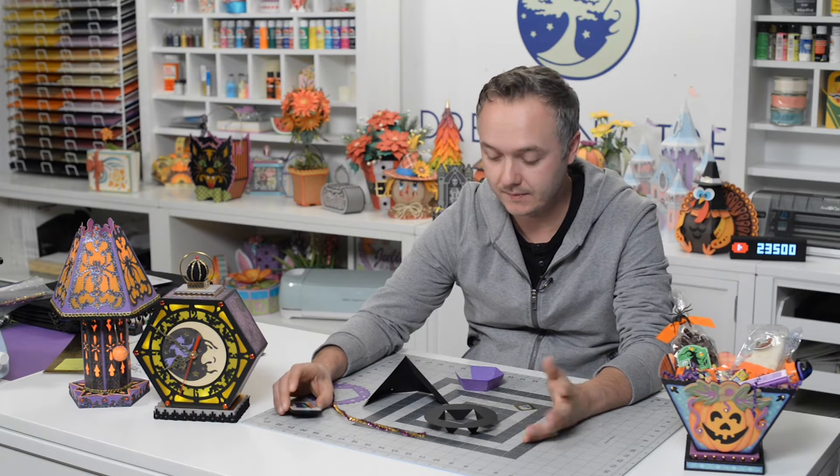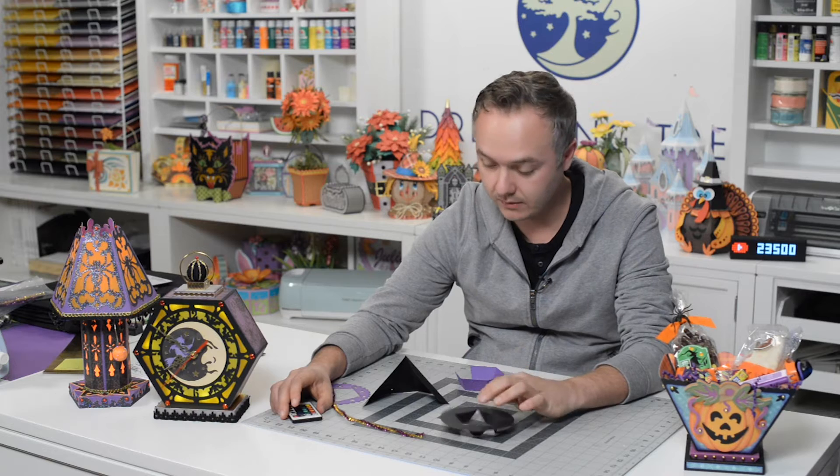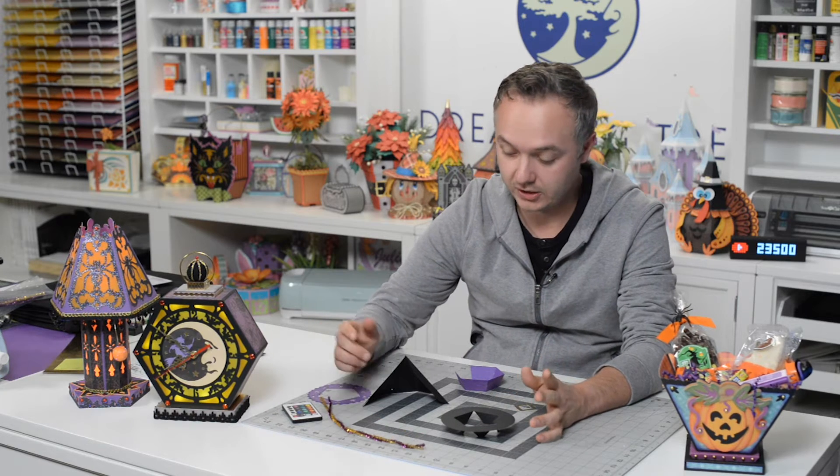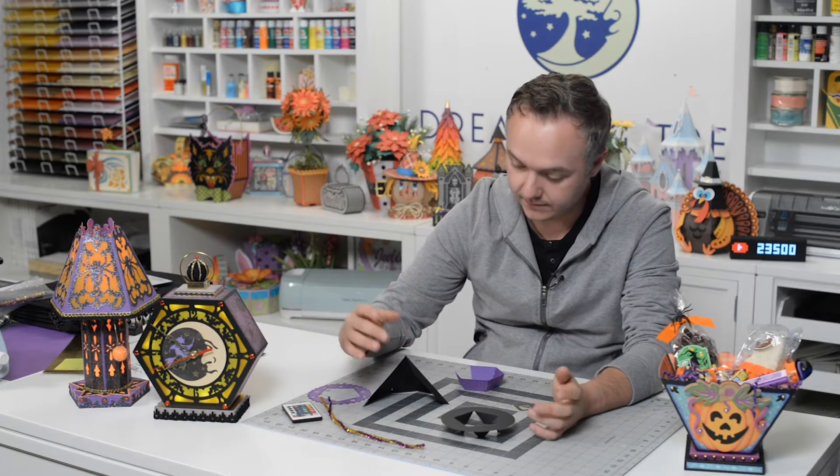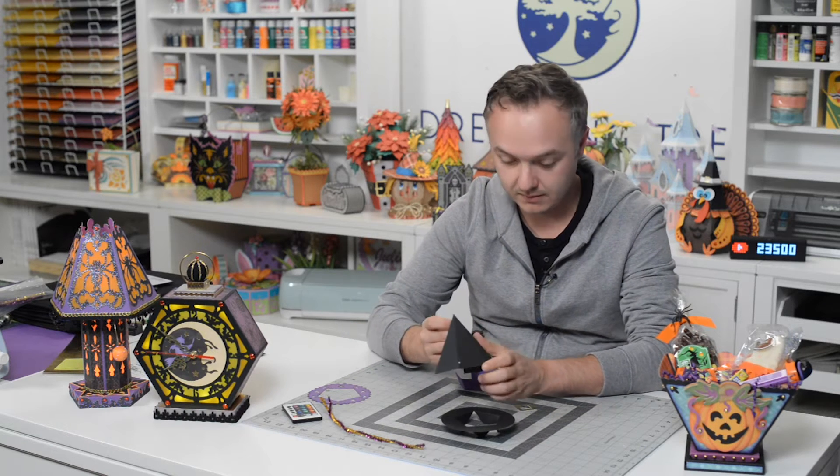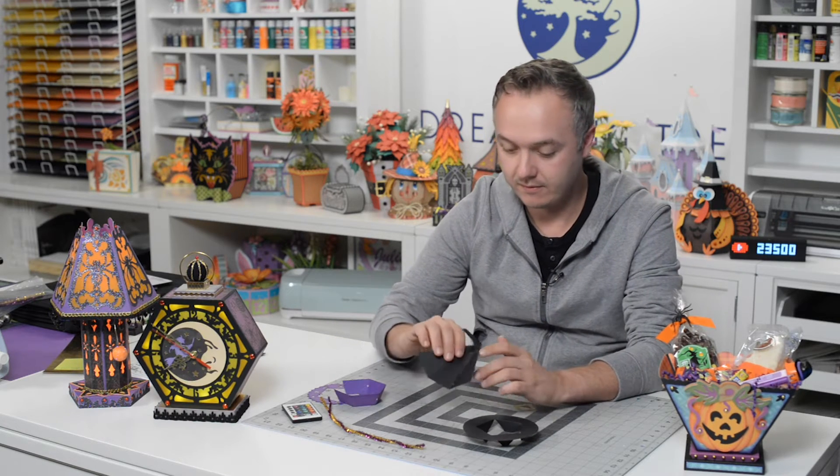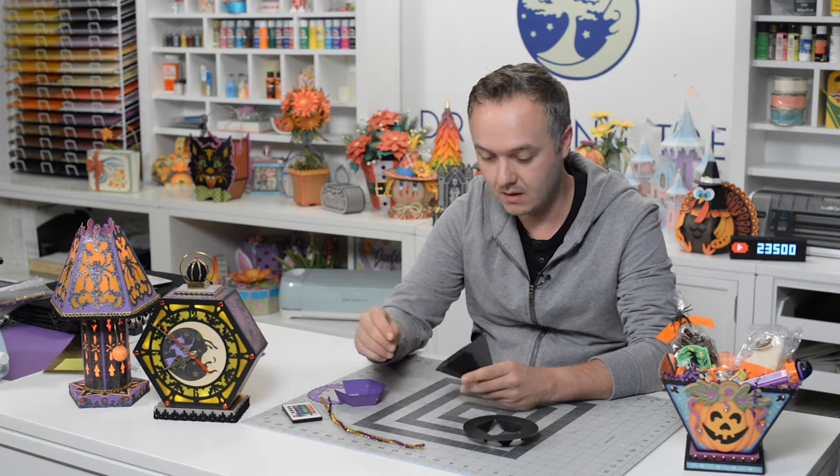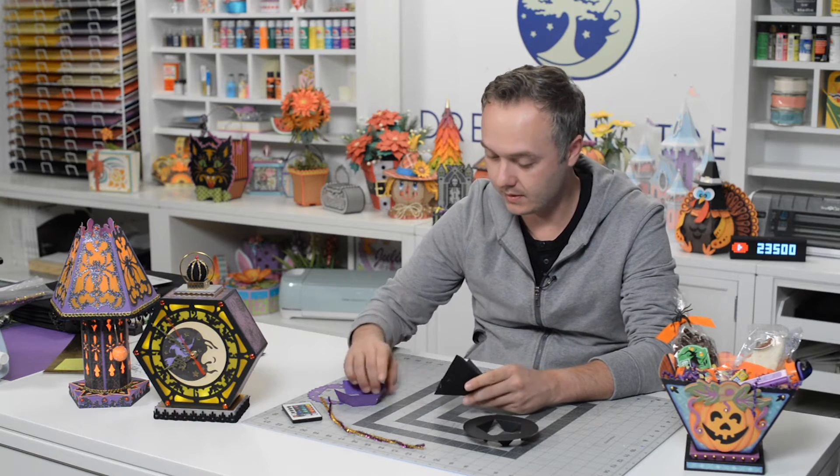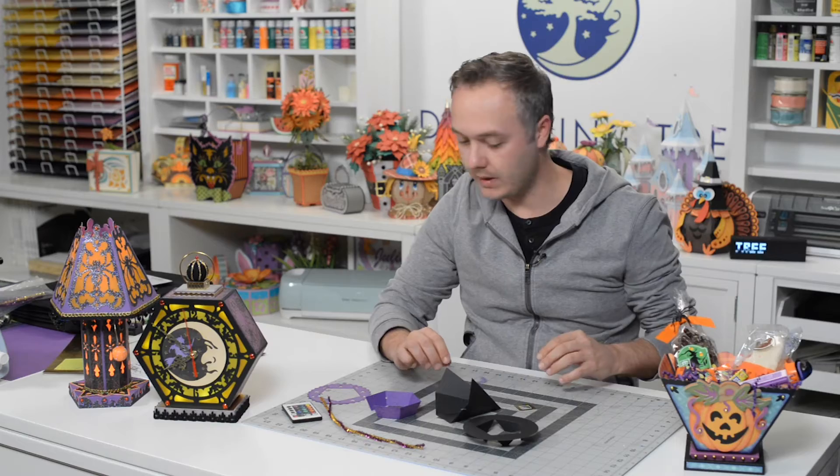But as always, after a release, we have a new freebie and today we're going to put together our Witch Hat treat cone. Very simple. I actually have a Halloween tree - I don't know if that's a thing, but I do have one and these are going to make really cool little favors for the kids. We'll fill them up with some candy, healthy ones of course, and then they can take them off the tree before school in the morning.